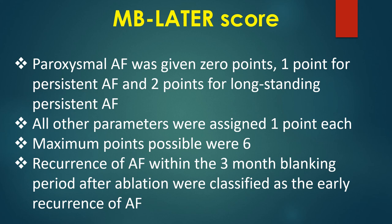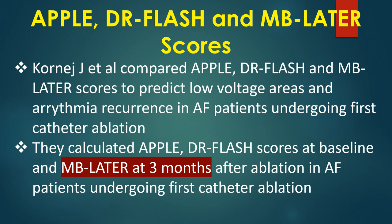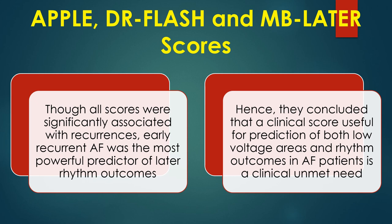Corne and colleagues compared APPLE, DR-FLASH, and MB-LATER scores to predict low voltage areas and arrhythmia recurrences in AF patients undergoing first catheter ablation. They calculated APPLE and DR-FLASH scores at baseline and MB-LATER at 3 months after ablation. Though all scores were significantly associated with recurrences, early recurrent AF was the most powerful predictor of later rhythm outcomes. They concluded that a clinical score useful for prediction of both low voltage areas and rhythm outcomes in AF patients remains a clinical unmet need.